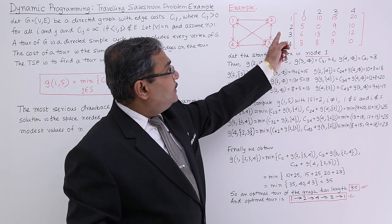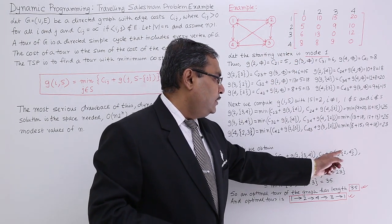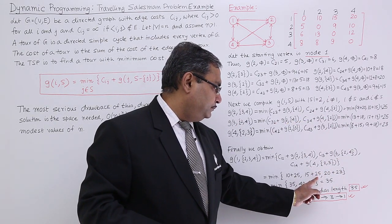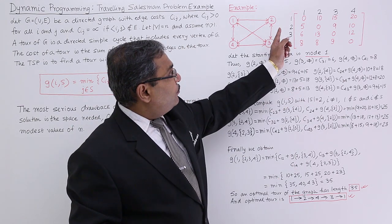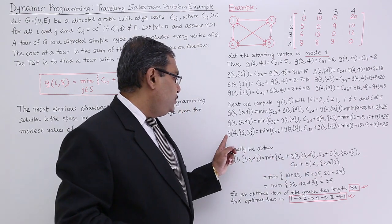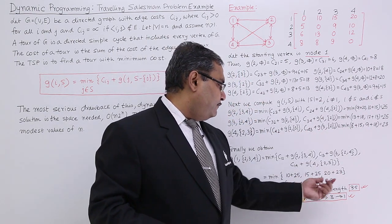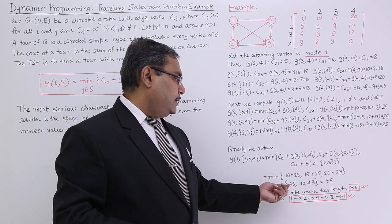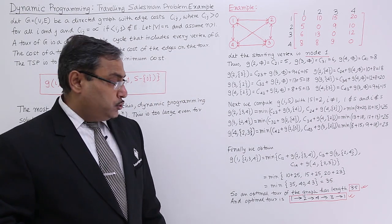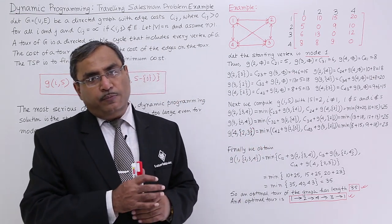C13 will be 15, that will be coming as 15 and G(3,{2,4}) will be coming as 25. C14 will be coming as 20 and G(4,{2,3}) will be coming as 23. So now go on adding and find out the minimum one. Here the minimum is 35, 40 and 43. Out of them, 35 will be the minimum. An optimal tour of the graph has length 35. So one answer we have got. Now let me find out the path.